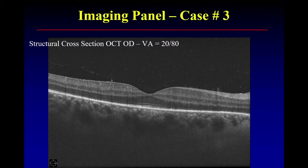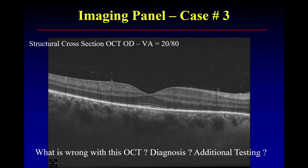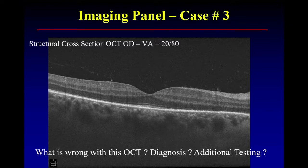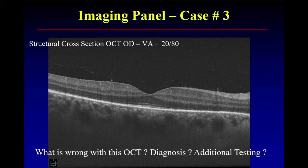Mike, you're up for this one. Cross-sectional OCT — I gave you the visual acuity. What's wrong with this OCT? Let's do some additional testing. The vision is 20/80. I do see maybe a little bit of ellipsoid zone attenuation. There's a little bit left underneath the central foveal area, but it's quite attenuated in the parafoveal region.